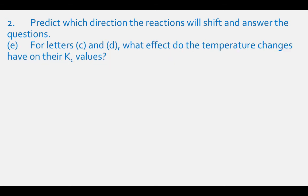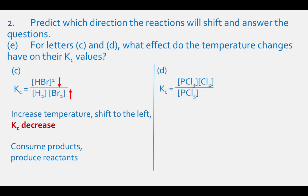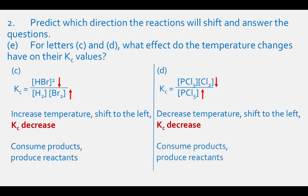For part E, to determine the effect temperature changes have on the Kc values of C and D, let's write the Kc expressions. For part C, the Kc expression is the concentration of HBr squared divided by the concentration of H2 times the concentration of Br2. If we increase the temperature and shift the reaction to the left, the value of Kc will decrease because the concentrations of reactants will increase and the concentrations of products will decrease. For part D, the Kc expression is the concentration of PCl3 times the concentration of Cl2 divided by the concentration of PCl5. If we decrease the temperature and shift the reaction to the left, the value of Kc will also decrease because the concentrations of products will decrease and the concentrations of reactants will increase.